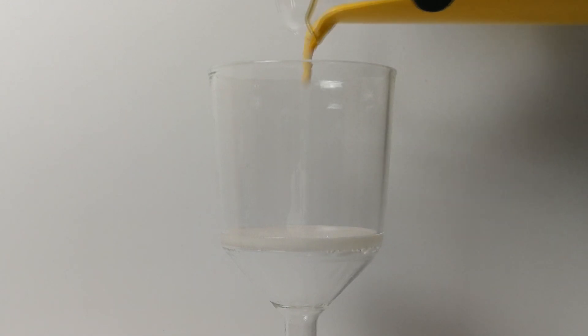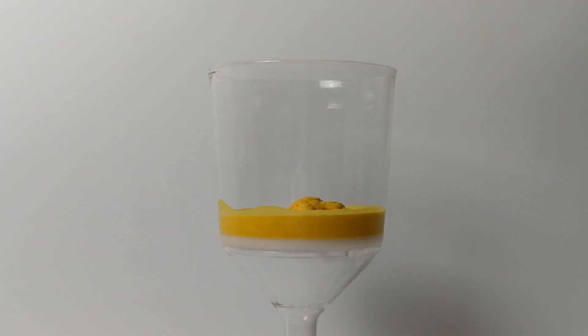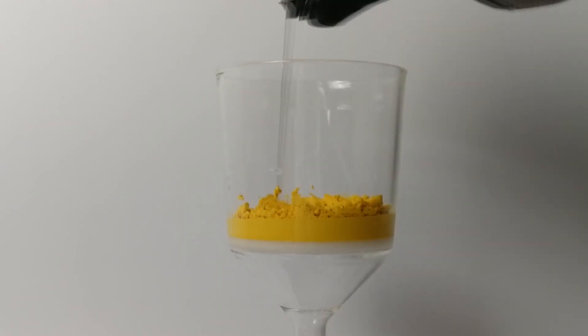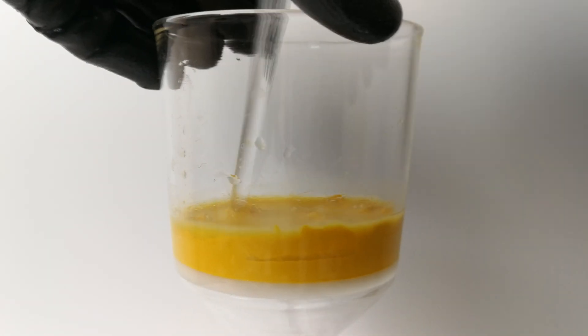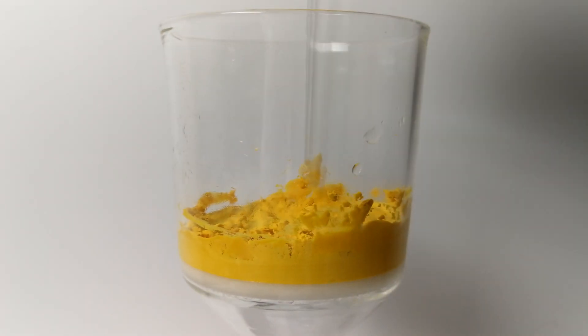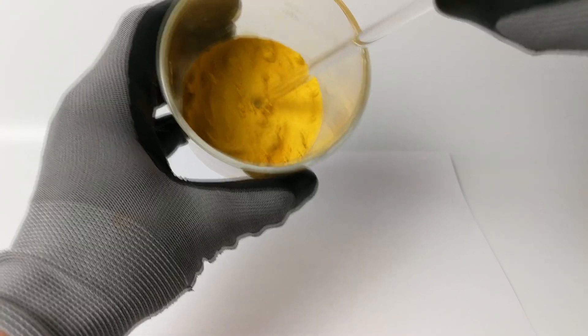The precipitate is then added to a glass filter funnel. Just in case, I decided to give it another wash. The precipitate is then scraped out of the funnel, dumped onto a piece of paper and left to dry.